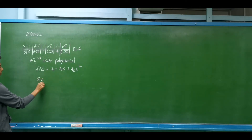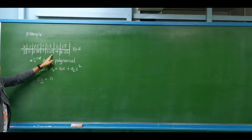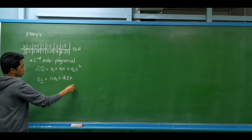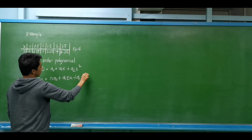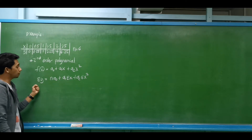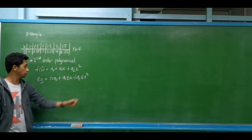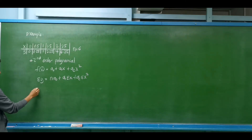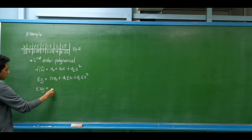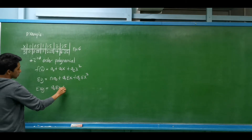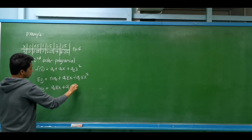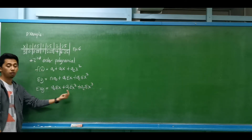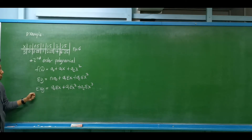The first equation is: summation of y = n·a₀ + a₁·(summation of x) + a₂·(summation of x²). The second equation is obtained by multiplying all terms by x: summation of xy = a₀·(summation of x) + a₁·(summation of x²) + a₂·(summation of x³).